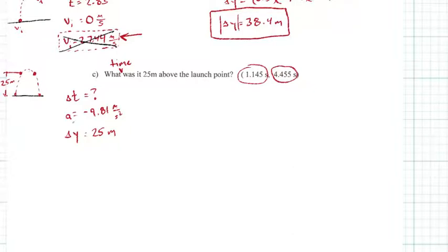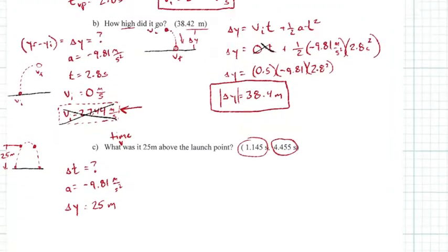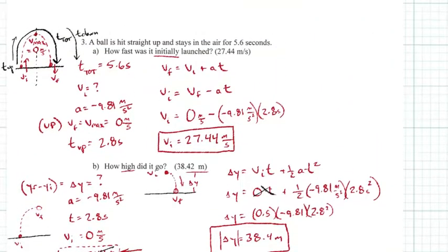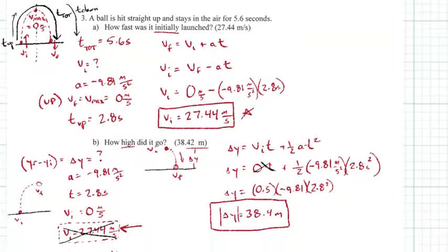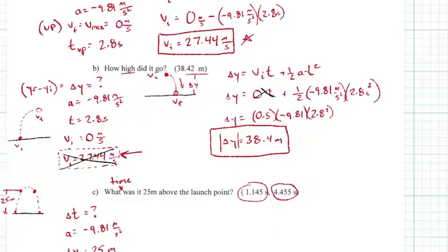We're solving for time. We have acceleration, we have our displacement. Can we solve for time just using these two? And the answer is I don't think so. I think we need to use one of our previous answers, and this is the one I'm thinking of: initial velocity is 27.44 meters per second.